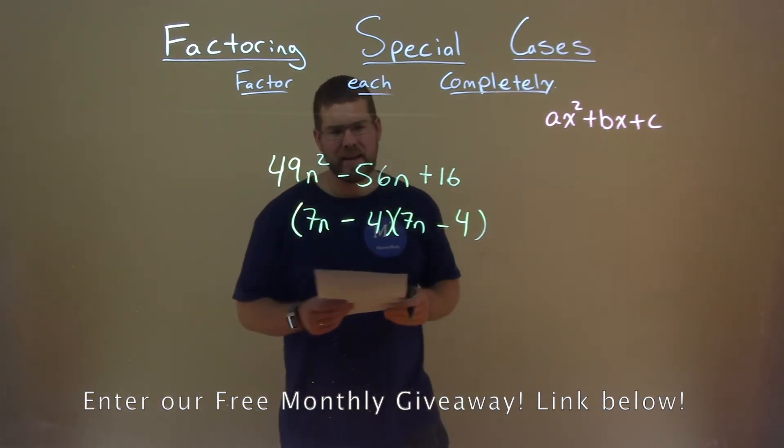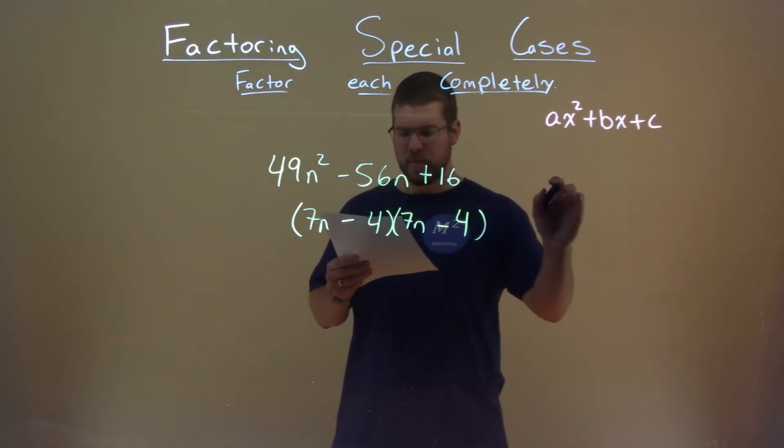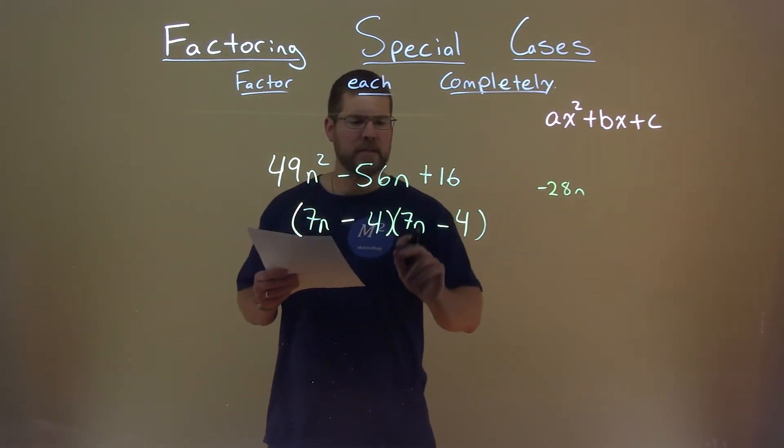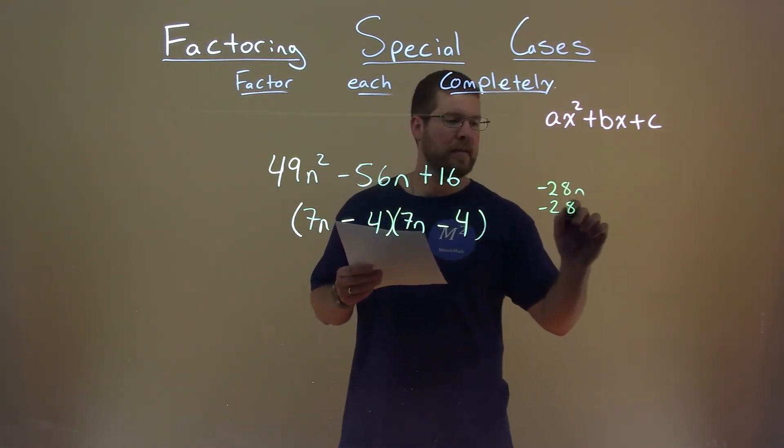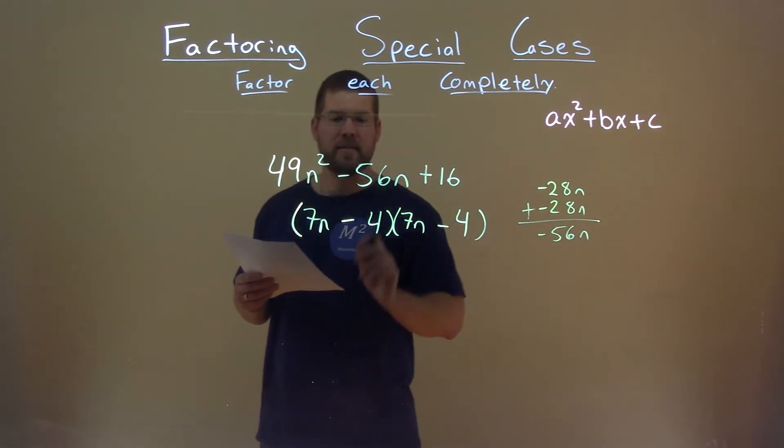What about this negative 56n here? Well, 7n times a minus 4 is a minus 28n. Negative 4 times 7n is a minus 28n. Add them together, we got a negative 56n that's on the inside.